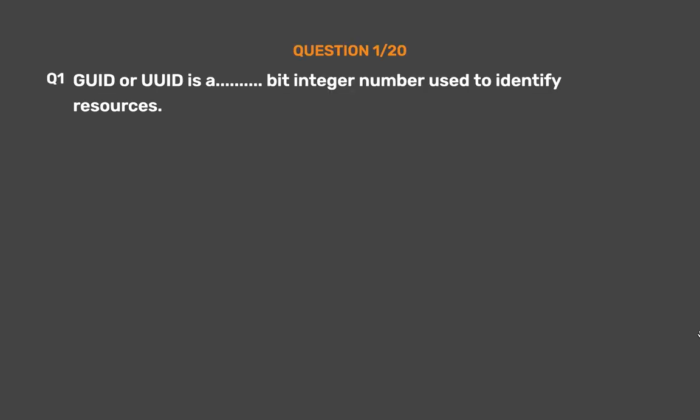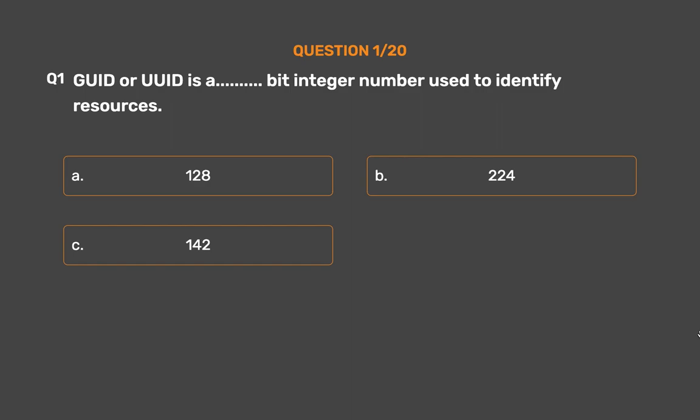Question number 1. GUID is a blank-bit integer number used to identify resources. Option A: 128. Option B: 224. Option C: 142. Option D: None of these.